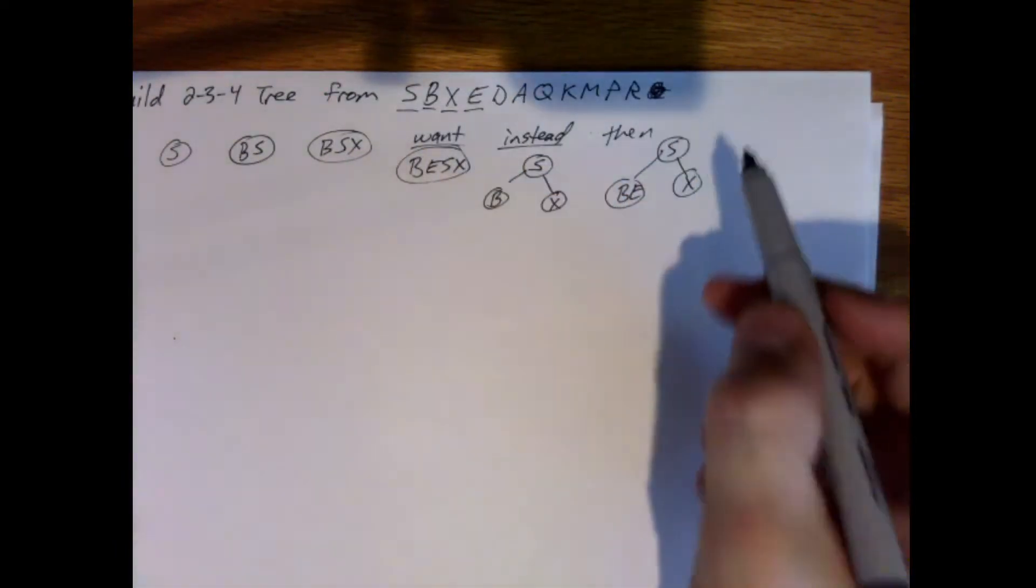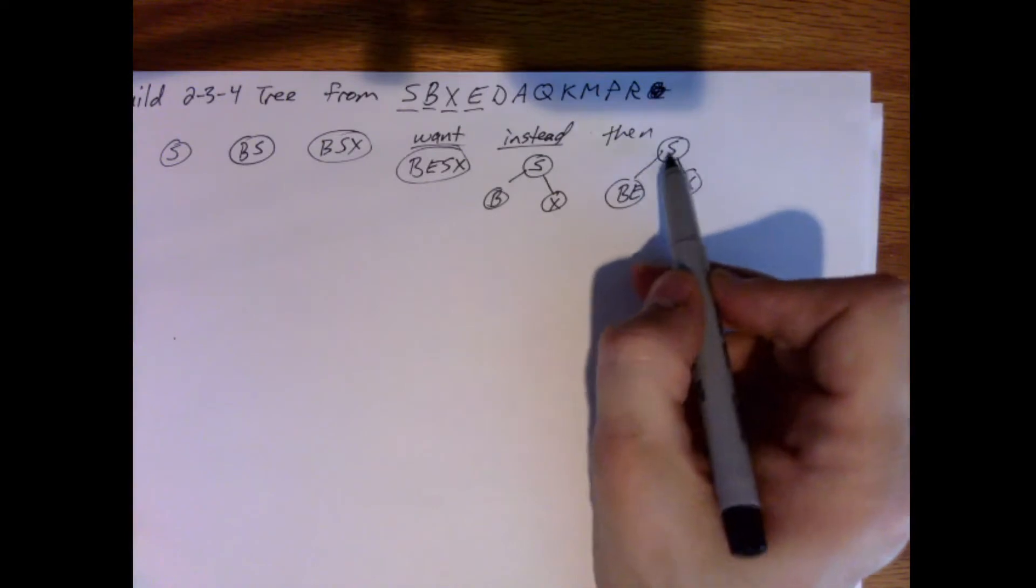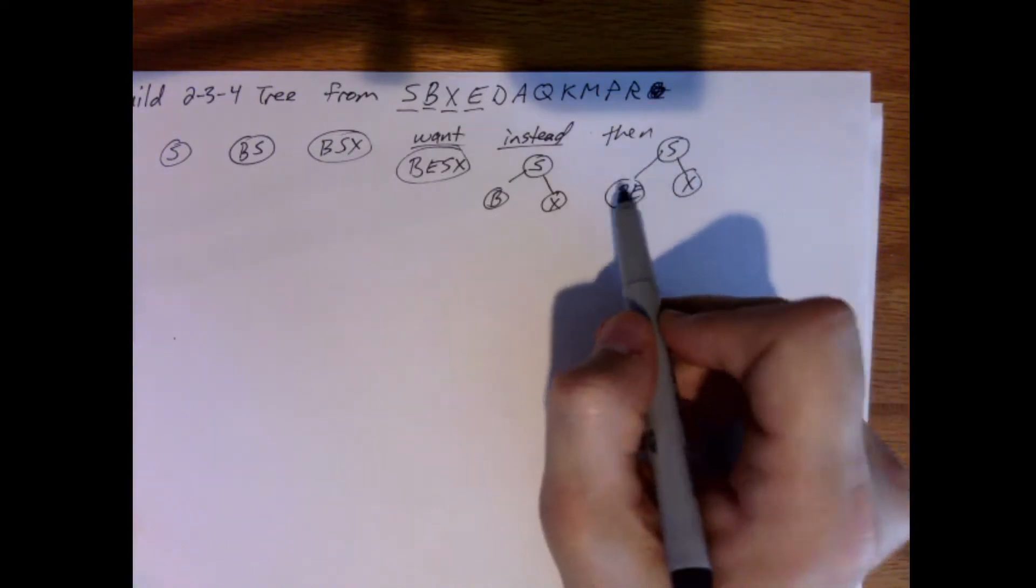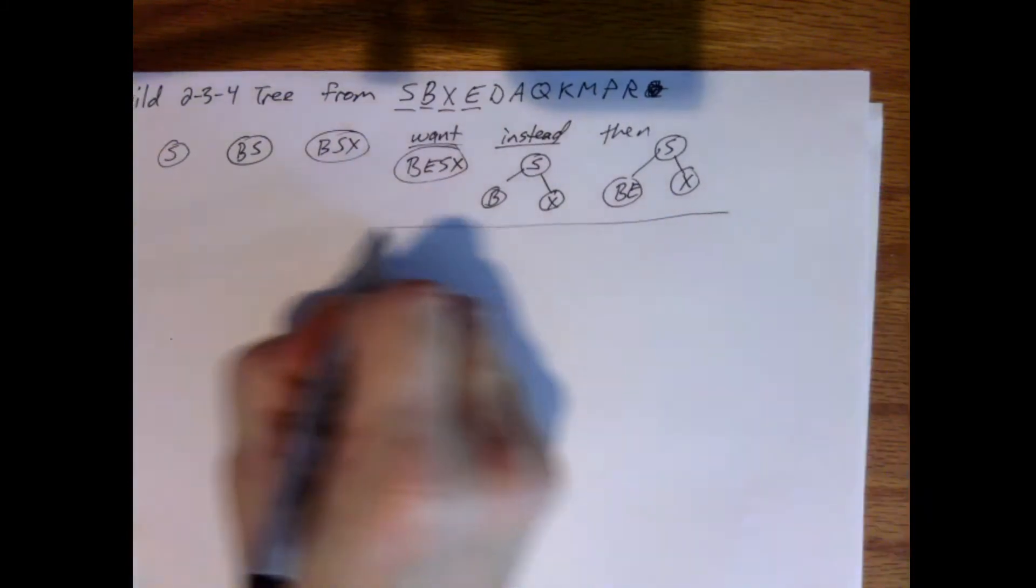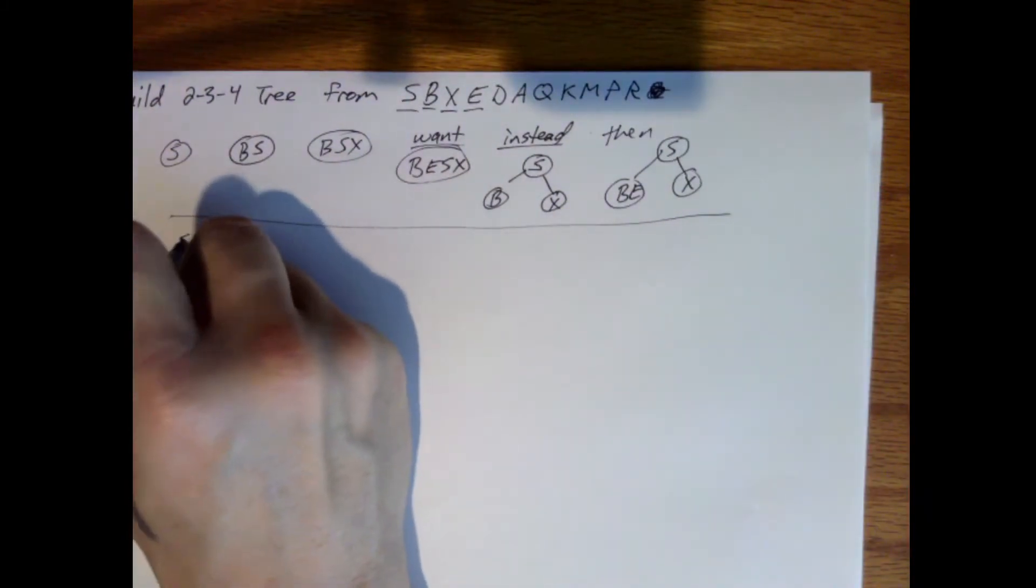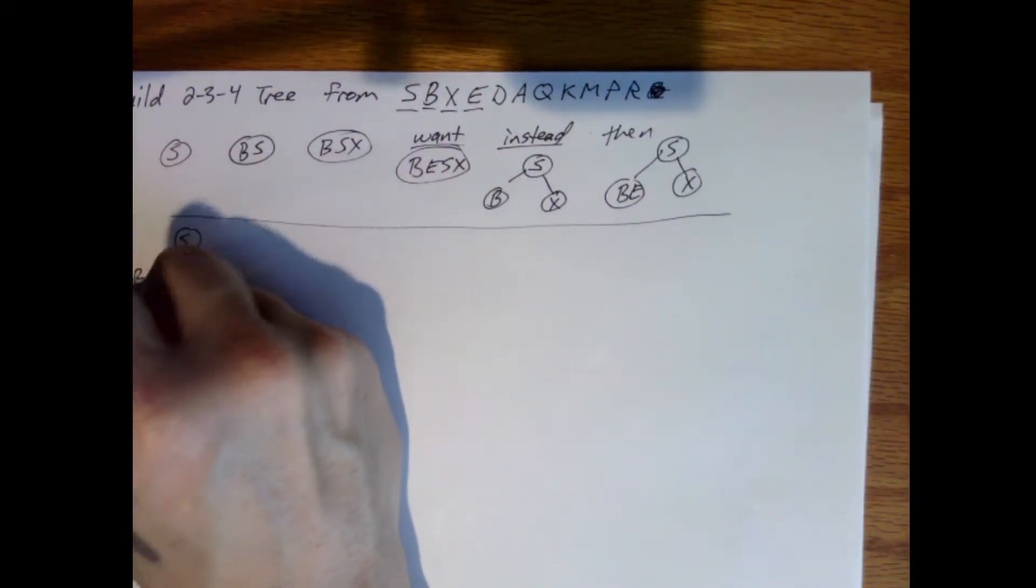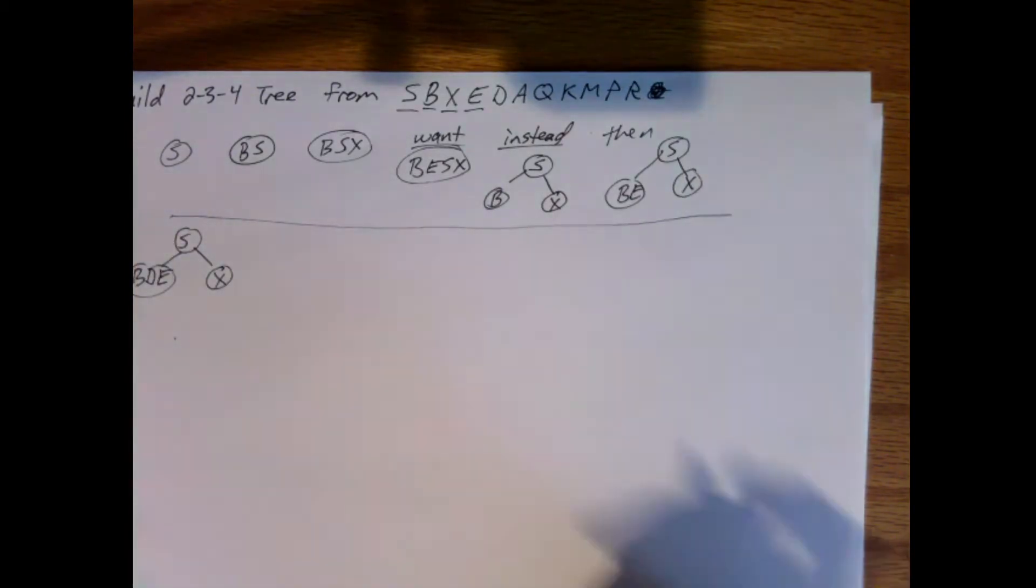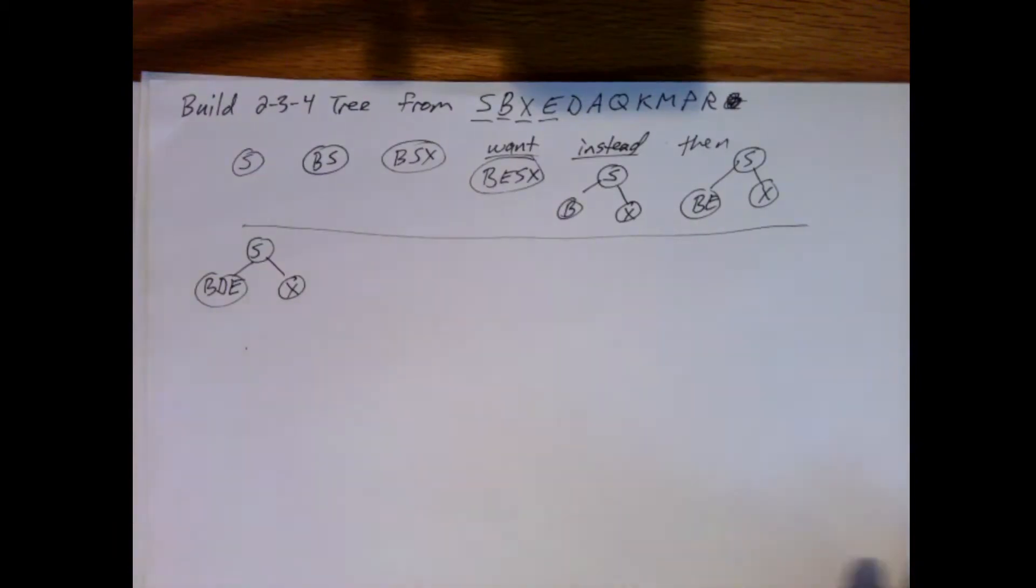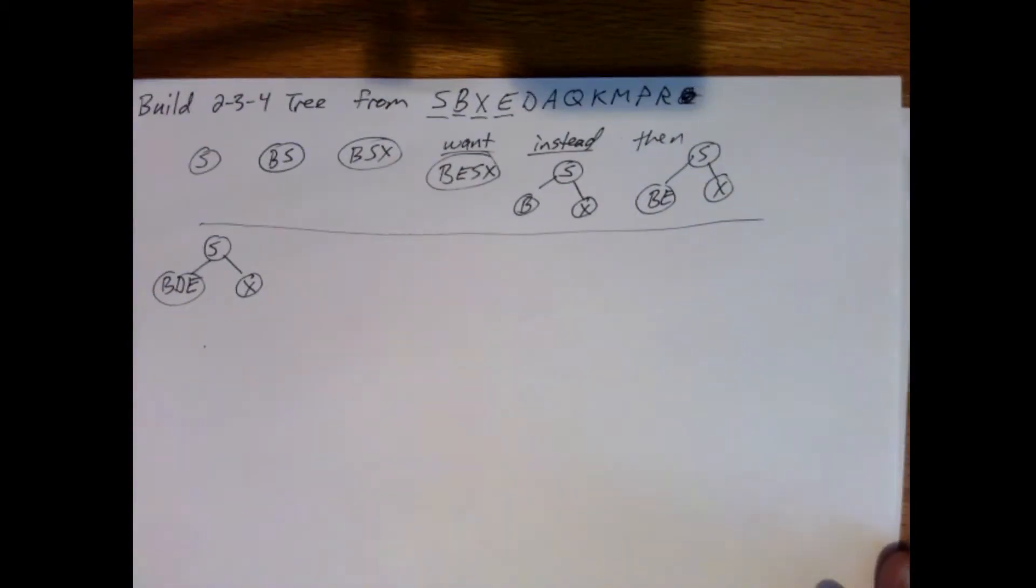Now I want to add the D. Come to here, that's less than this, come down to here, it'd be B, D, E. So that's what we have so far.